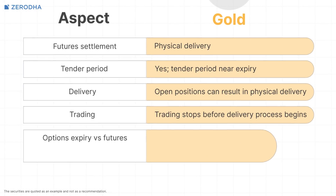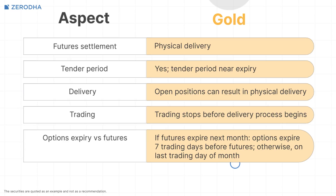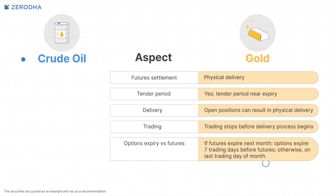Gold options add another layer. Unlike equity options, which expire alongside futures, gold options are monthly contracts. If the related future contract expires in the following month, the option expires seven trading days before the future expiry. If not, they expire on the last trading day of the month.